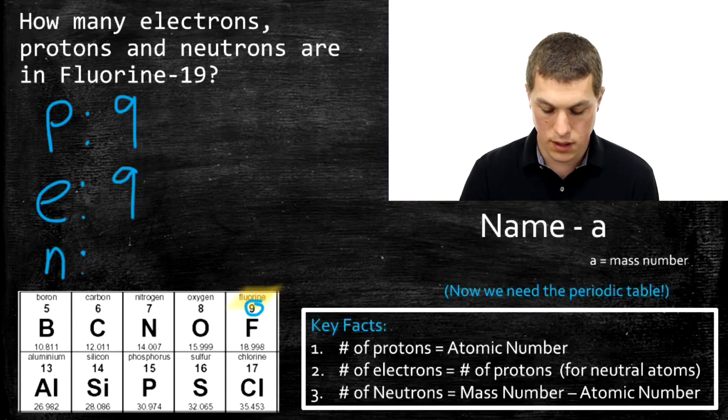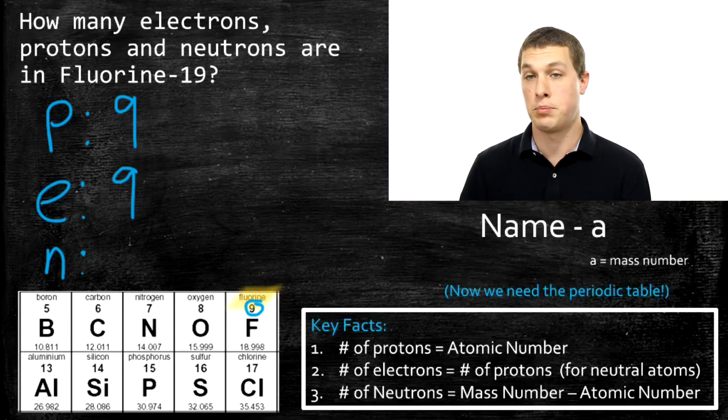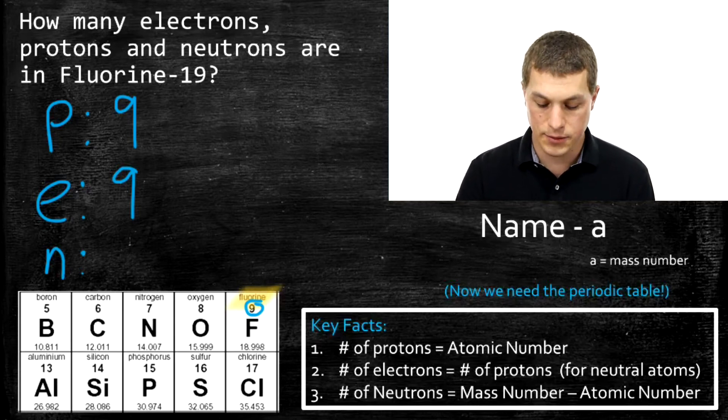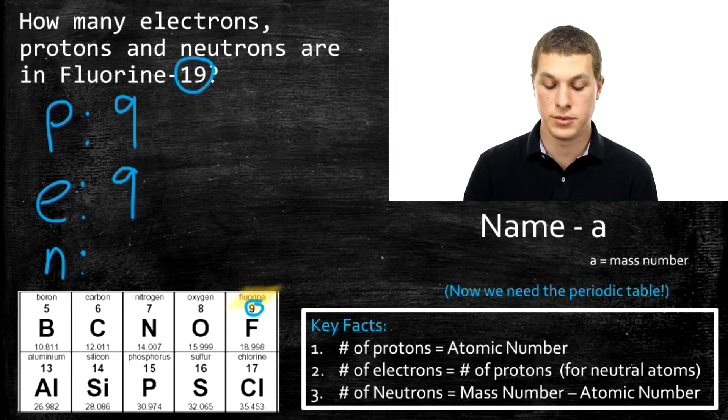Finally, neutrons. Remember, to get neutrons, we subtract the mass number, or we subtract protons from the mass number. And the mass number in this case is 19. That's always what we're listing after we say an isotope. So Fluorine-19 has a mass number of 19.